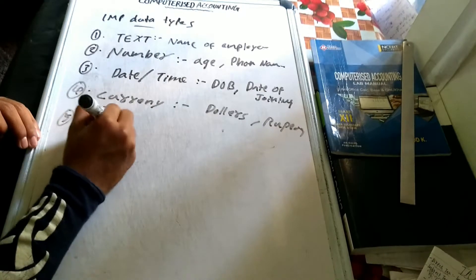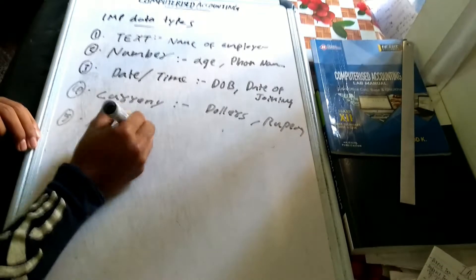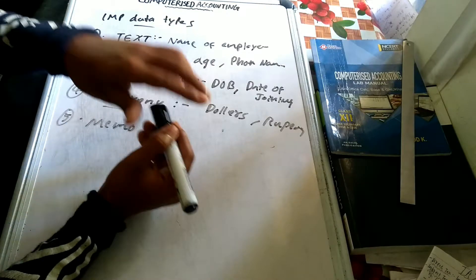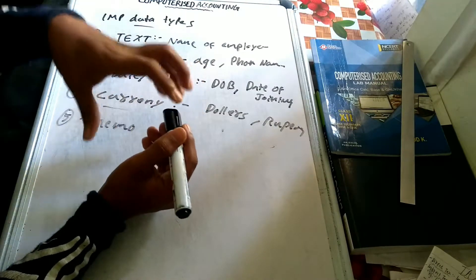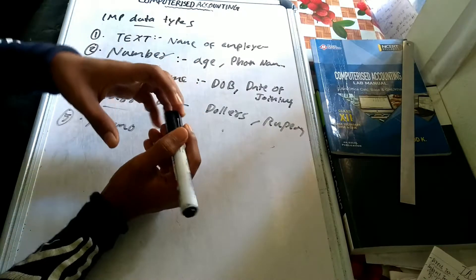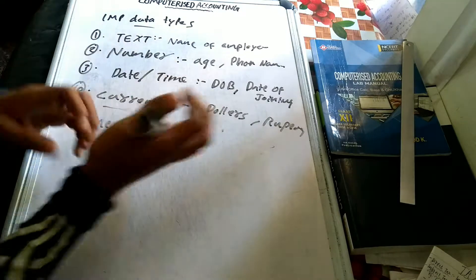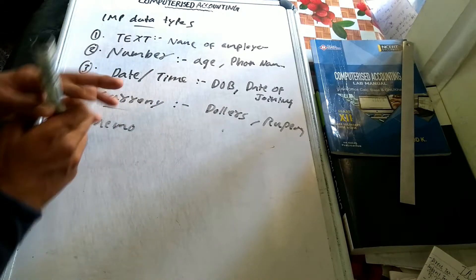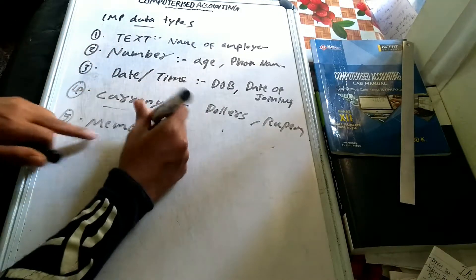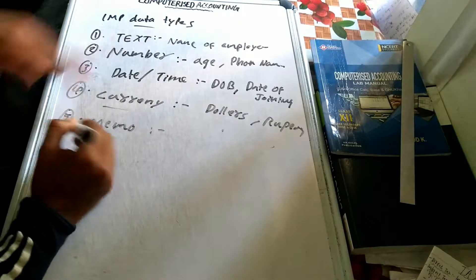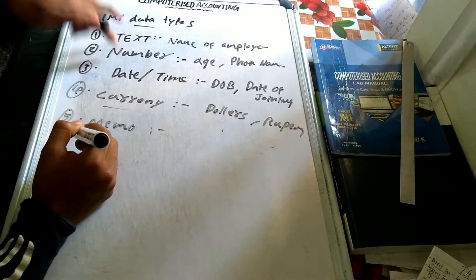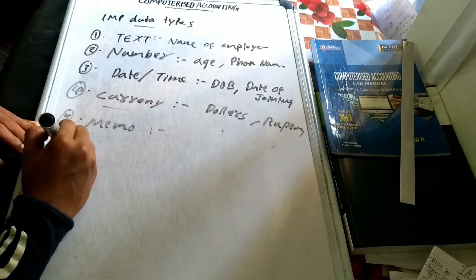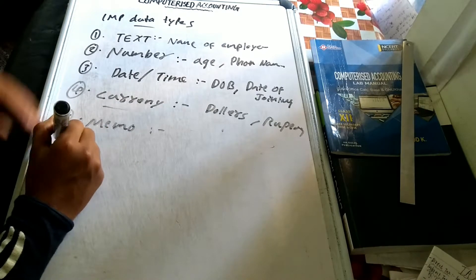Next is memo. Memo is a combination of text and numbers. If you have a combination of text and numbers, you use the memo data type.